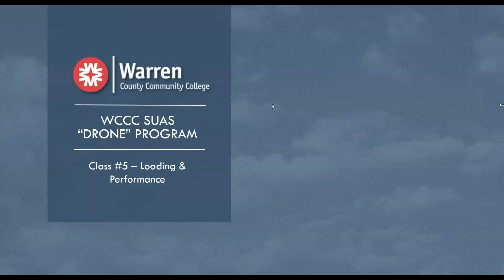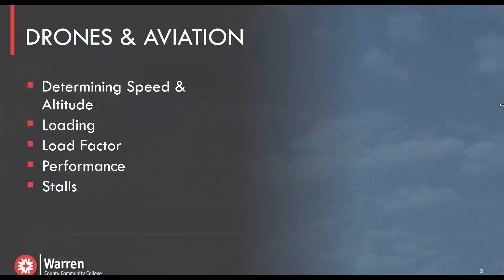Welcome to Class 5, Loading and Performance, for the Warren County Community College Small Unmanned System Drone Program Part 107 Prep Course, otherwise known as UAS 105. In this video, we're going to talk about drones and aviation, how to determine speed and altitude, the rules in Part 107 about loading, load factors, aircraft performance, and stalls and critical angle of attack. These can be confusing subjects, so we suggest you also watch the other provided videos.